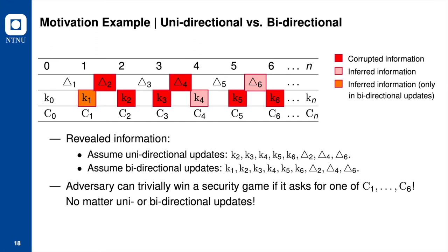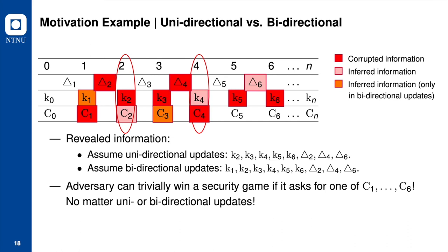Notice that in both uni and bidirectional update settings, the adversary can trivially win the confidentiality game if it asks for C1 through C6. The adversary will not trivially win if it asks for none of C1 to C6. For example, if the adversary asks for C1, it can infer C2 by knowledge of Token 2. If it knows C2, then it can use K2 to decrypt C2 and know the underlying plaintext to trivially win a confidentiality game.